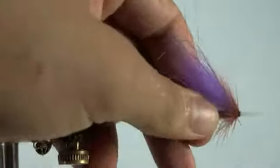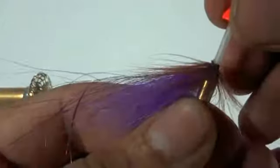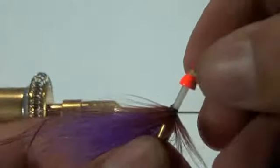We remove the fly from the pin and then push the cone head firmly onto the front of the fly.